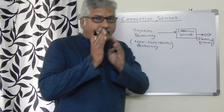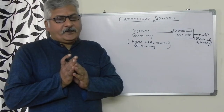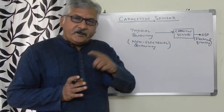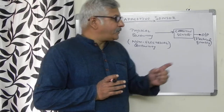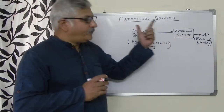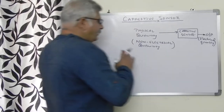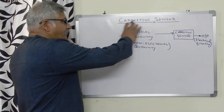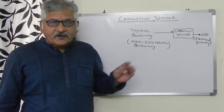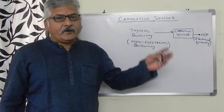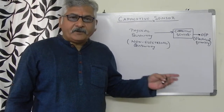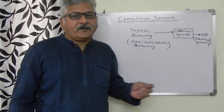The conversion of the physical quantity into an electrical quantity takes place with the help of variation in the capacitance of the sensor. So the complete definition of the capacitive sensor is: it converts a physical quantity into an electrical quantity by means of capacitance of the sensing device.